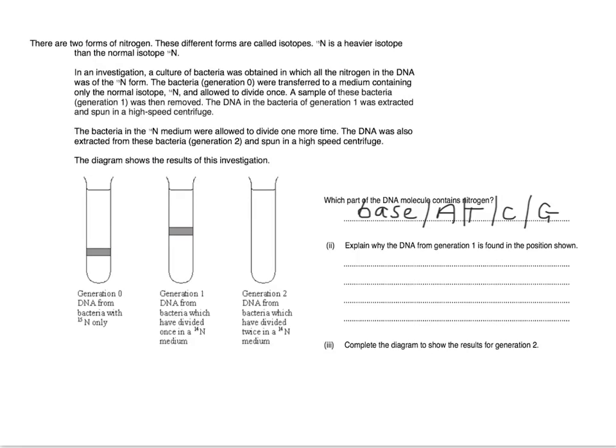Part 2 asks you to explain why the DNA from generation 1 is found in the position shown. Here, you need to explain that you understand that the DNA has been produced by semi-conservative replication, so the new DNA strands are made up of a mixture of both 14N and 15N DNA.